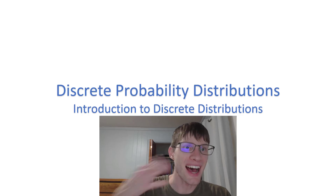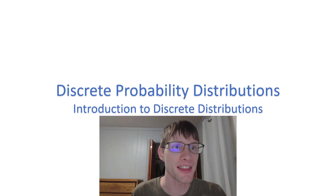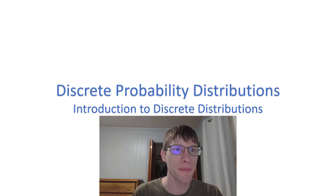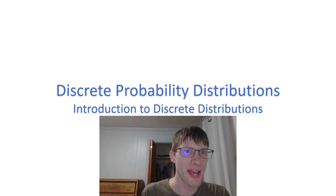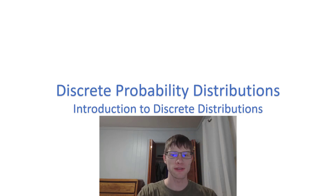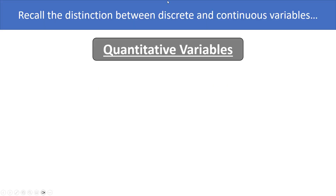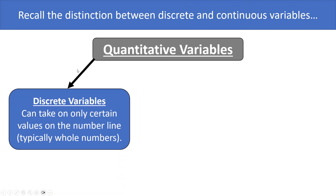Welcome! In this video we get to talk about discrete probability distributions. Recall that quantitative variables can be broken into either discrete or continuous variables. Discrete variables, which are the focus of this chapter, can take on only certain values on the number line, typically the whole numbers.